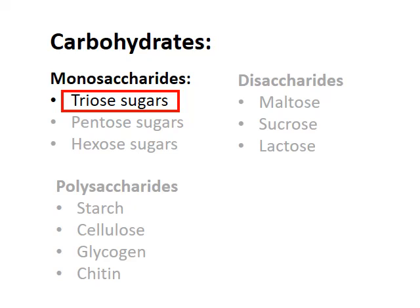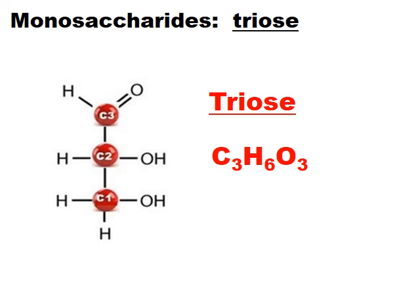The first monosaccharides we'll discuss are the triose sugars. Looking at the molecular structure of a triose sugar, we can see it has three carbon atoms. There are also six hydrogen atoms and three oxygen atoms. The chemical formula C3H6O3 represents a triose sugar, and these are the simplest of the monosaccharides.